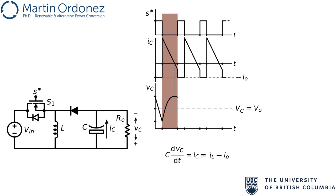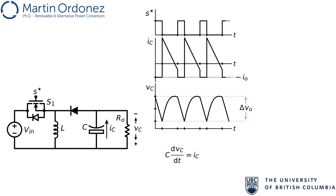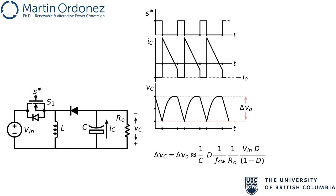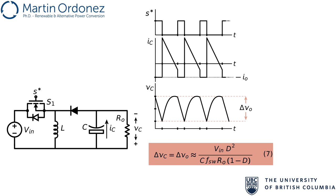During the off time, the current decreases linearly starting from the inductor current peak minus the load current. The capacitor voltage is a concave parabola with a maximum occurring when the capacitor current crosses zero. These cycles repeat every switching period with an amplitude of delta V_out, which is given by the charge accumulating in the capacitor scaled by the capacitor value. This charge delta Q can be approximated by the area below the capacitor current during the on time, which equals T_on multiplied by the load current IO. Representing T_on as a function of the switching period and duty cycle, replacing the output current by the output voltage divided by the load resistance, and replacing the switching period by one over the switching frequency and the output voltage by the input voltage times the input-to-output voltage ratio, the expression that approximates the output voltage ripple is found by rearranging terms. This expression can also be used to size the appropriate capacitor required to maintain a desired level of ripple.